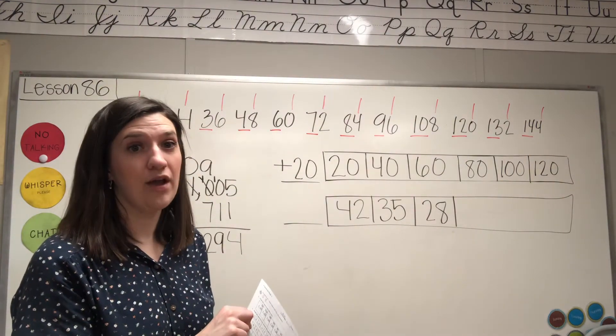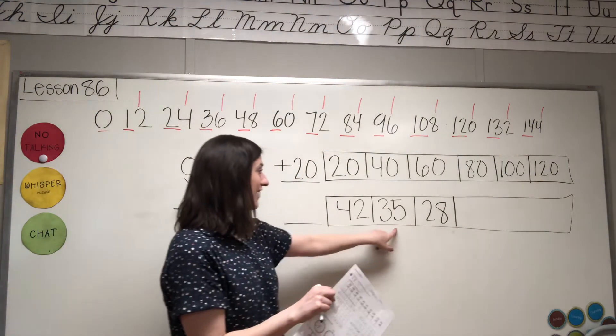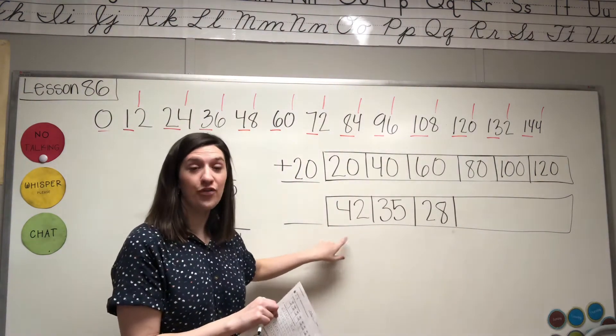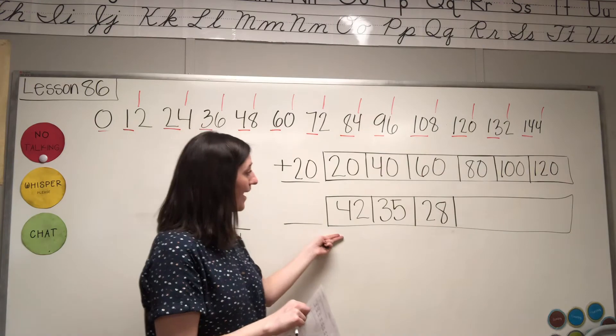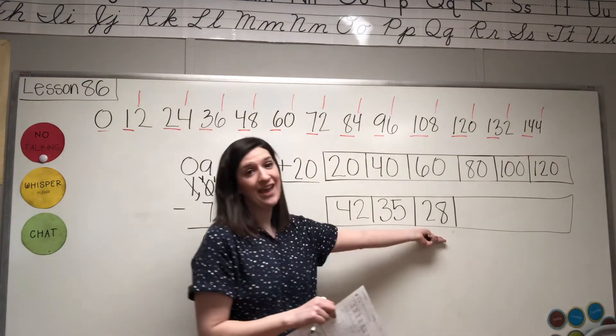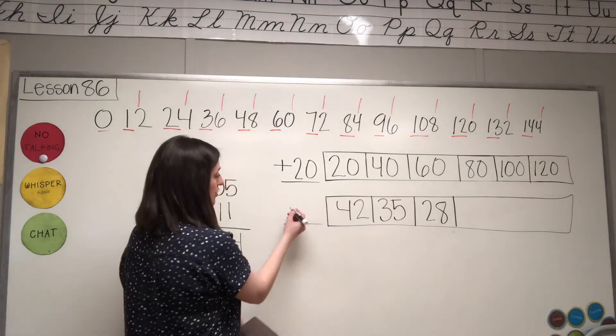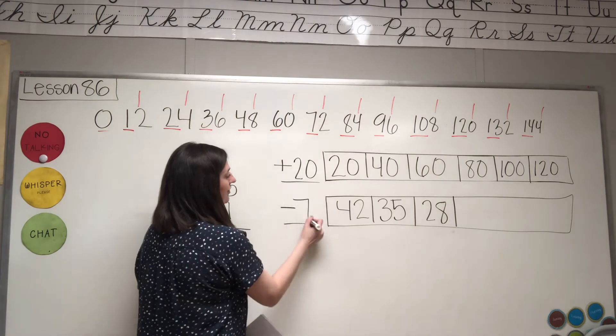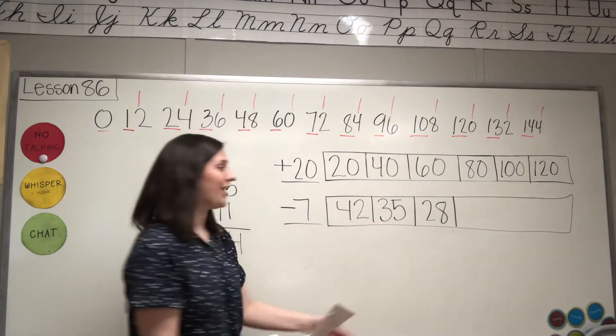So that is your count by 7s, but it's extra tricky because it's getting smaller. So we're gonna do minus 7 because this pattern is getting smaller by 7.